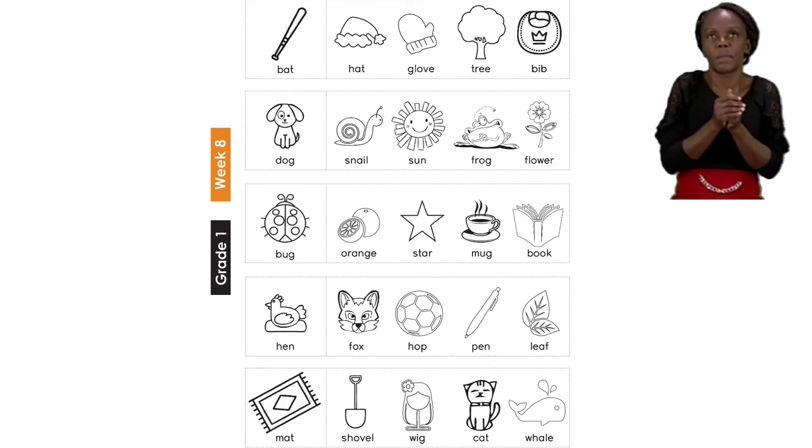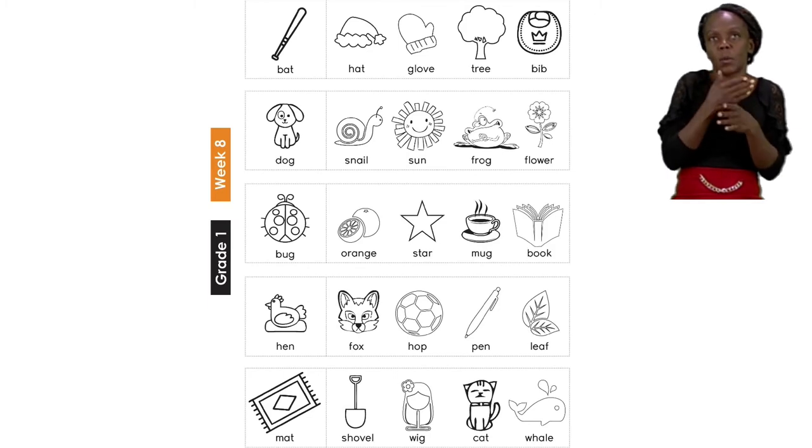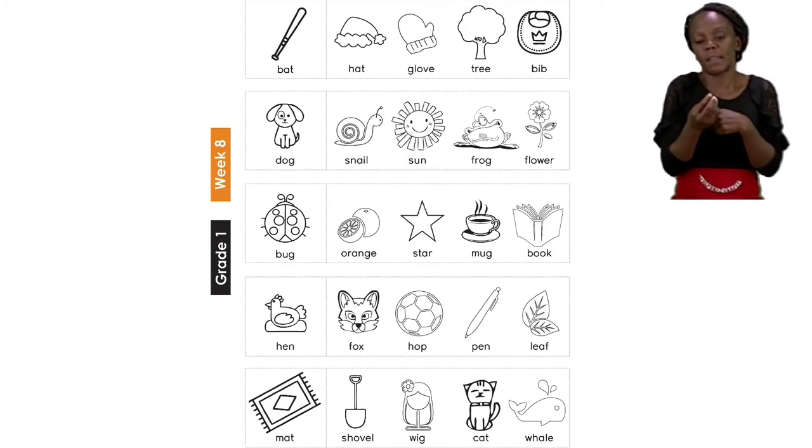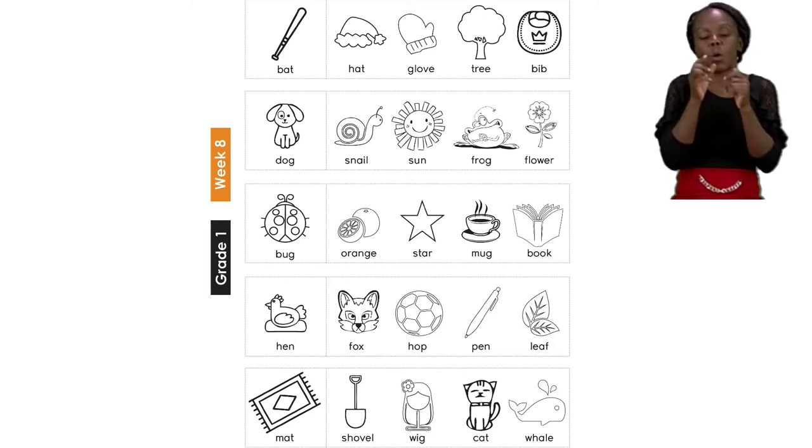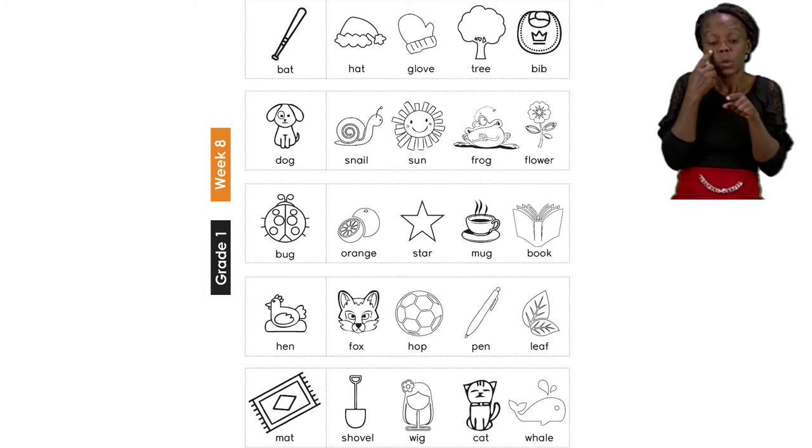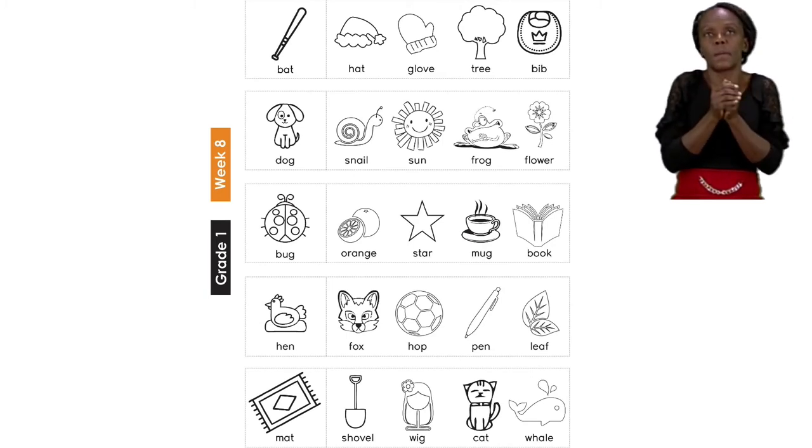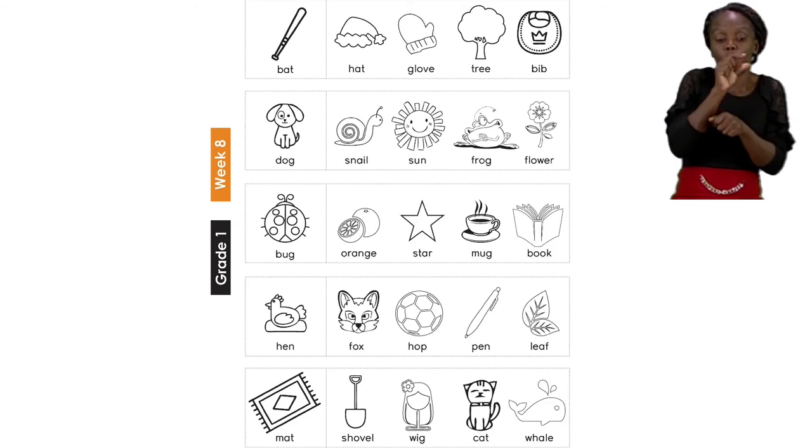The first word that we are going to be taking a look at is bat. Now each word has been given a word and a picture so that you can try and find the rhyming word quicker. Remember, sometimes there's more than one rhyming word. So you need to open your ears and listen carefully.